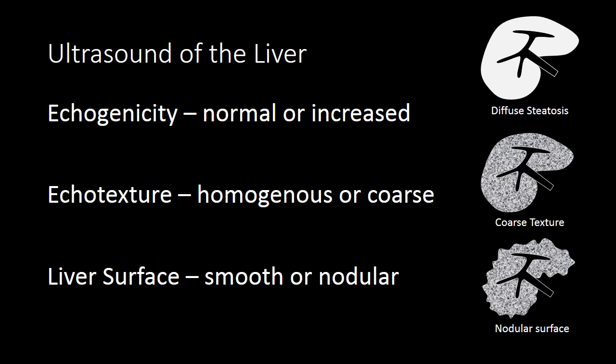Breaking ultrasound of the liver down into its most basic components, you are looking for three main findings: one, the echogenicity of the liver, or how bright the liver is; two, the texture of the liver and whether or not the texture is homogenous or coarse; three, you're looking at the surface of the liver to see if you can detect any nodularity, which would be abnormal and indicative of cirrhosis.